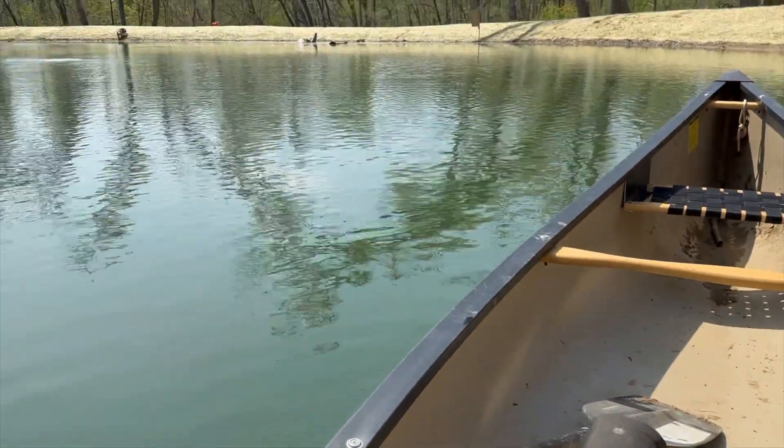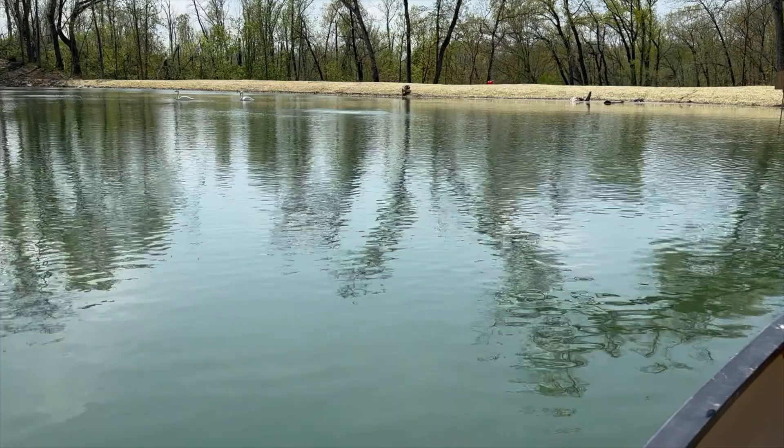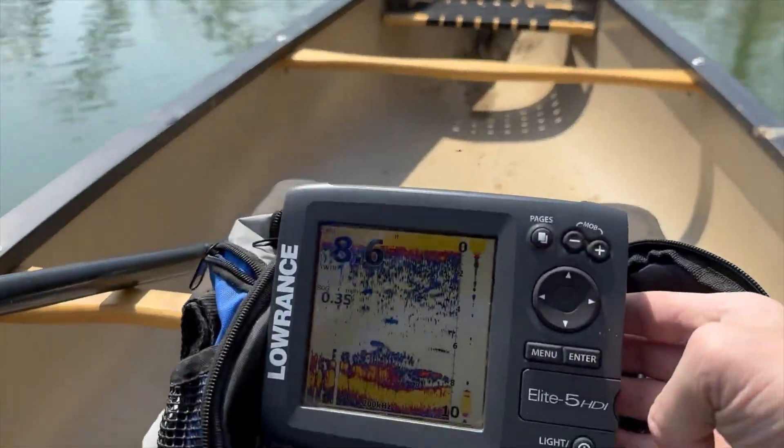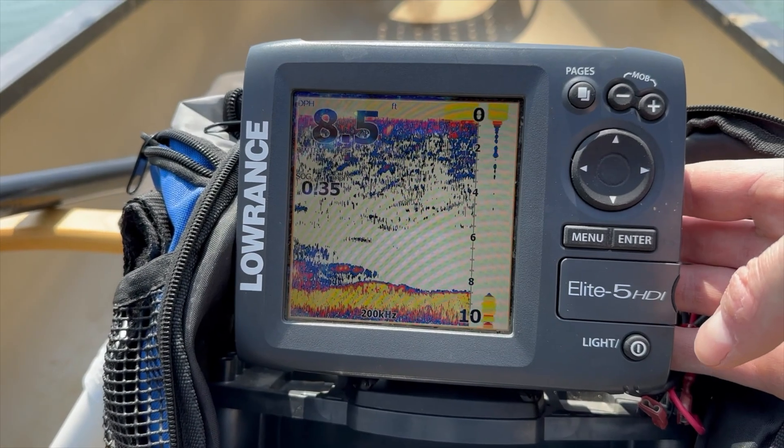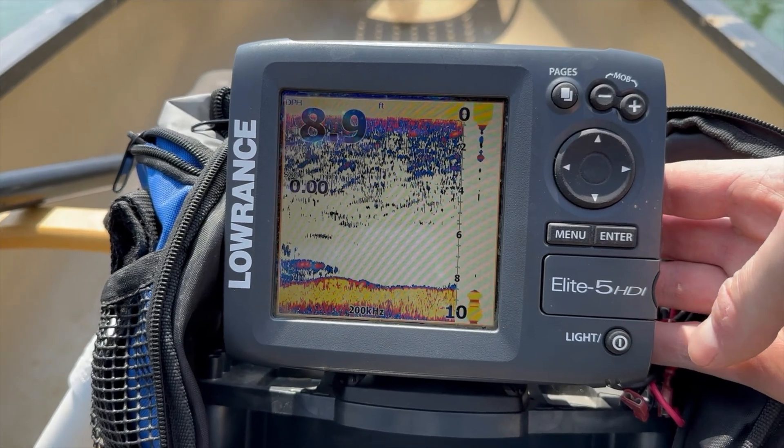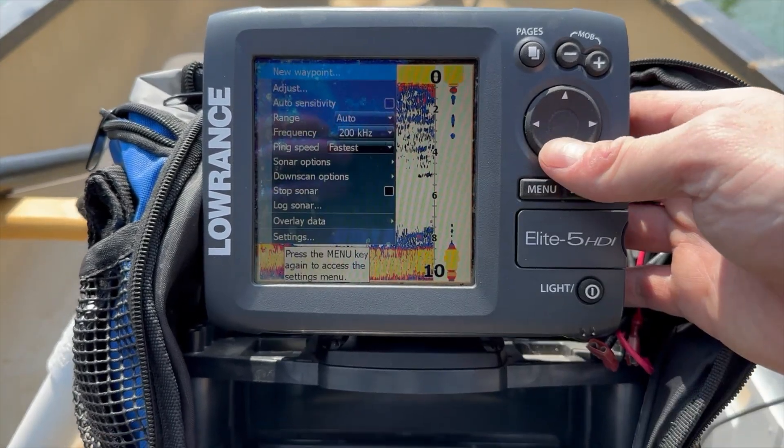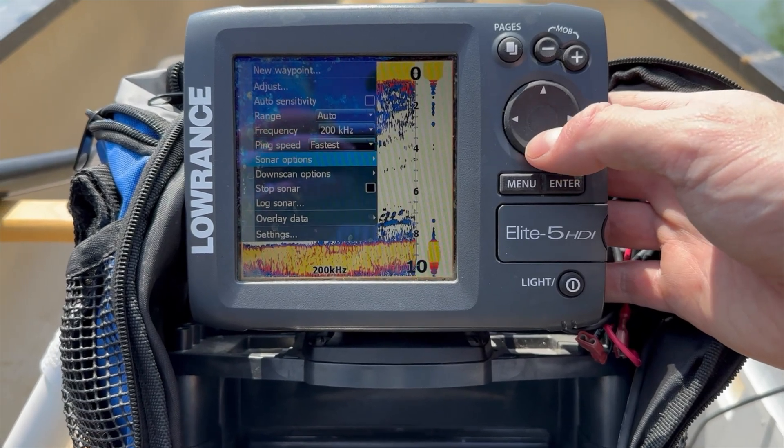All right guys, we are out on the pond and I am going to map the bottom contours. This is an old unit, I think it's an Elite 5 HDI. You can log your sonar.